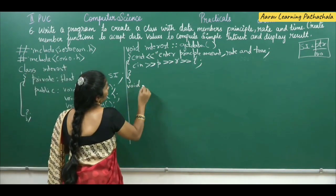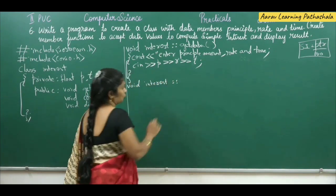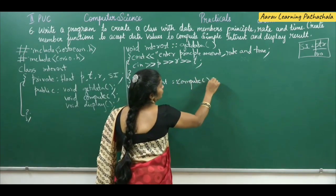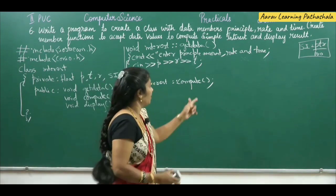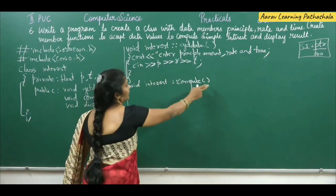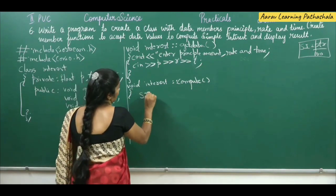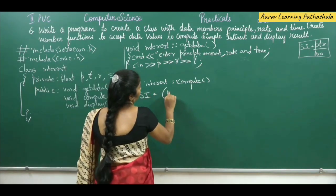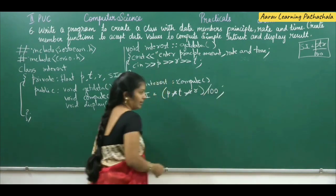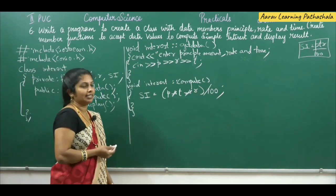Next we write the compute function: void interest scope resolution operator compute. Do not put a semicolon here because we are writing the body of a function. Inside compute, the calculation is: SI = P * T * R / 100. This is the compute function.